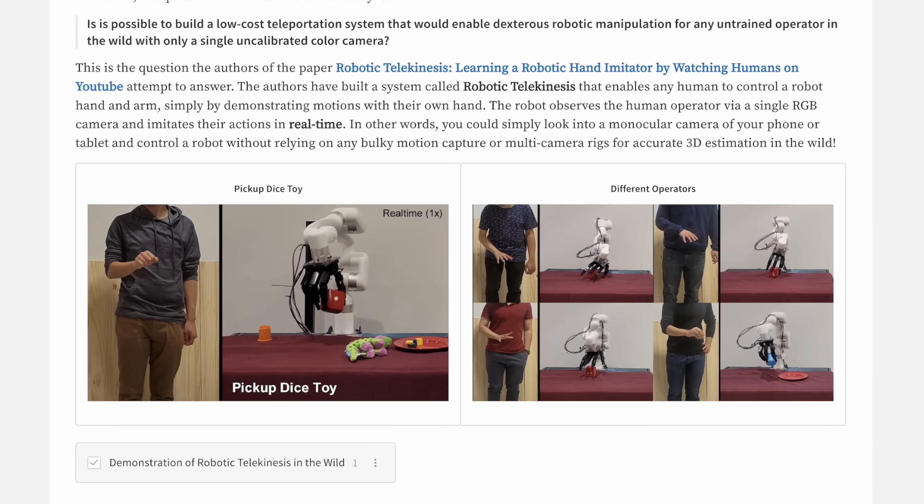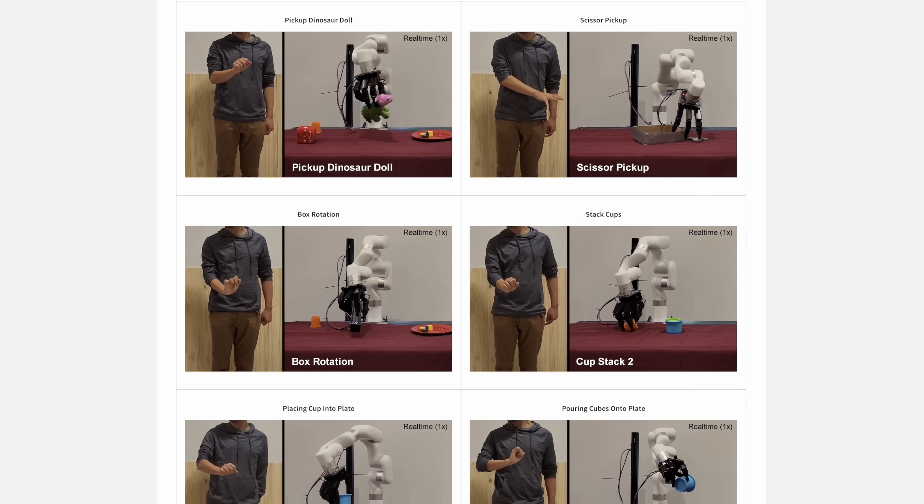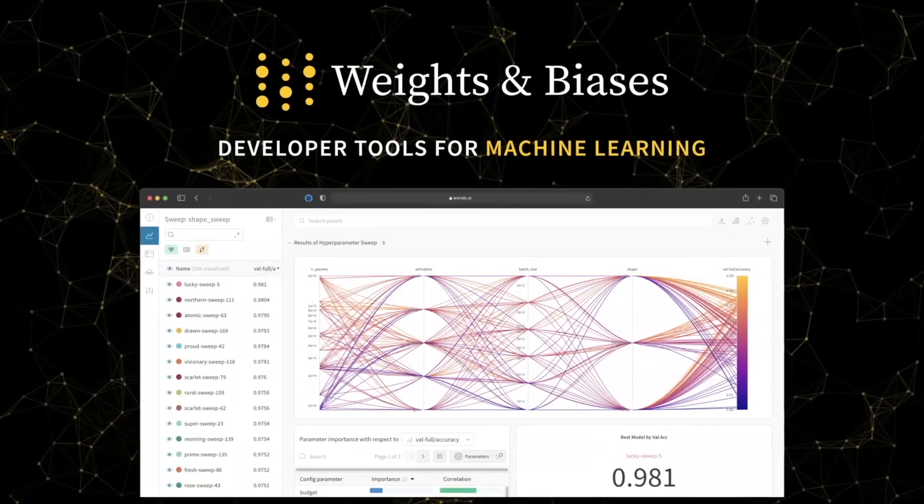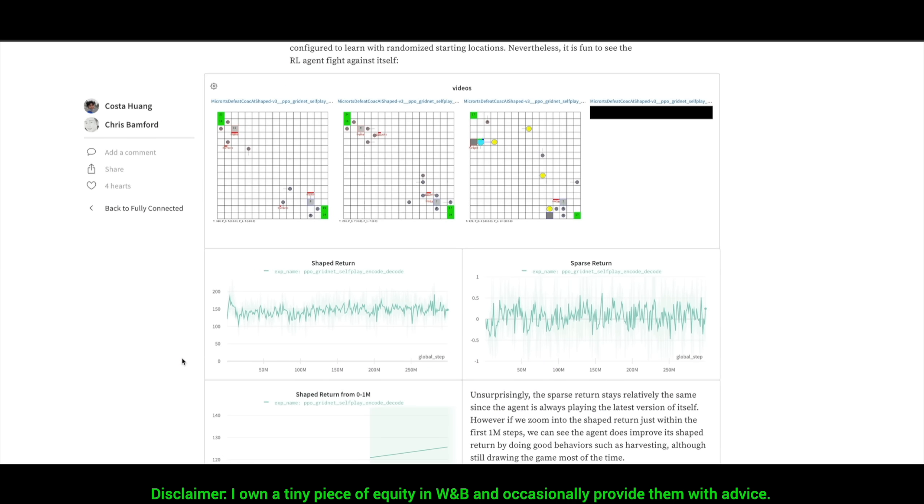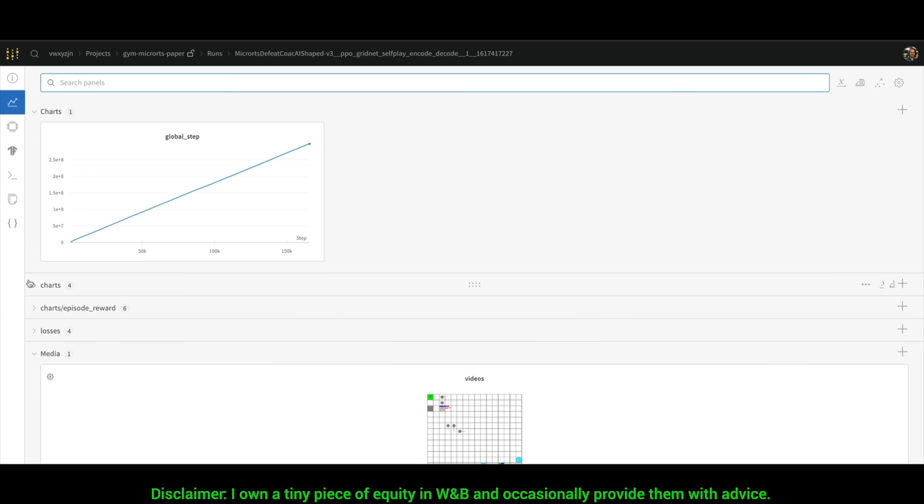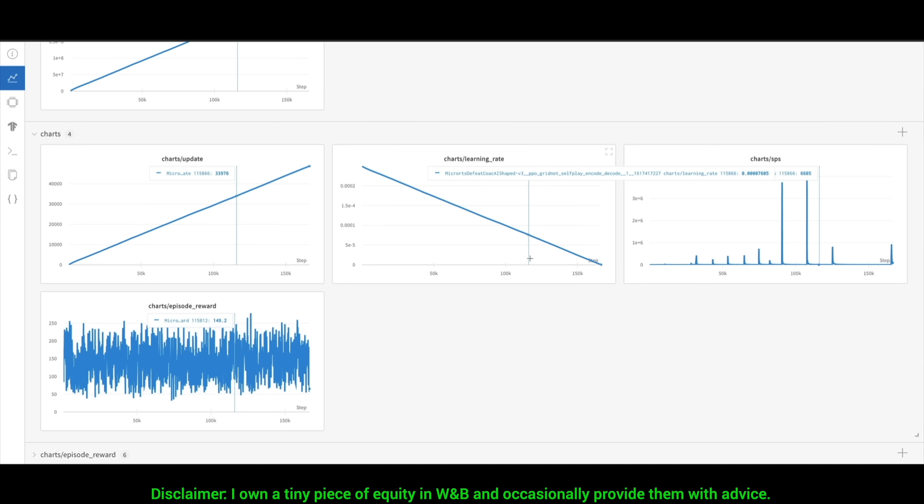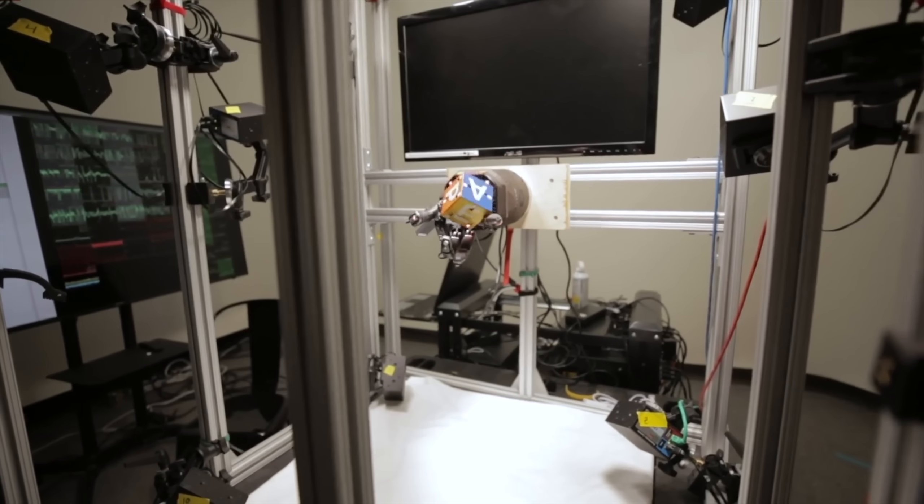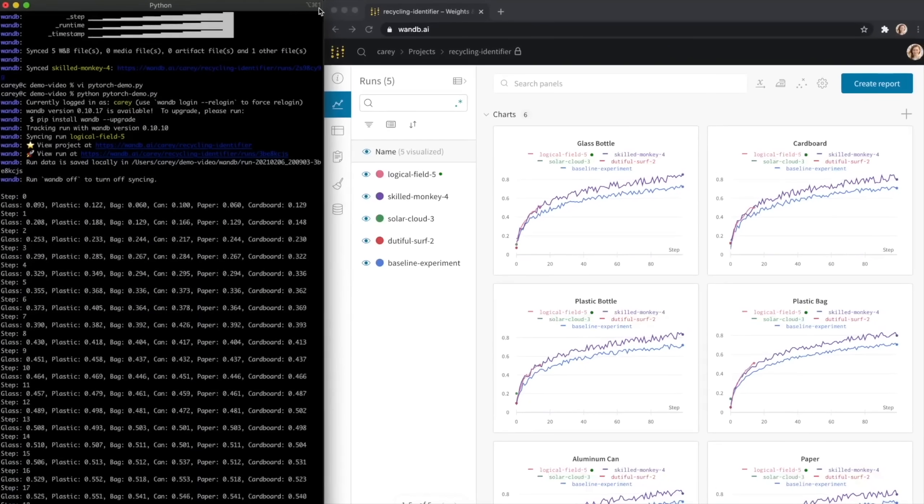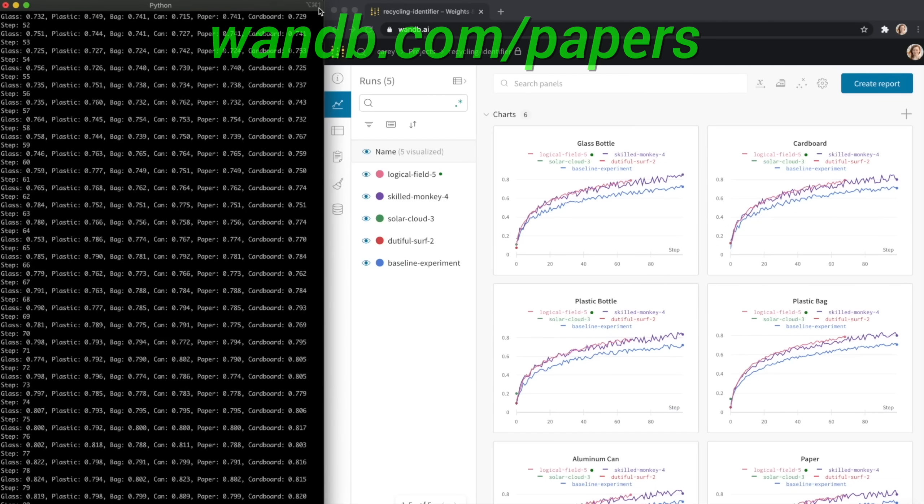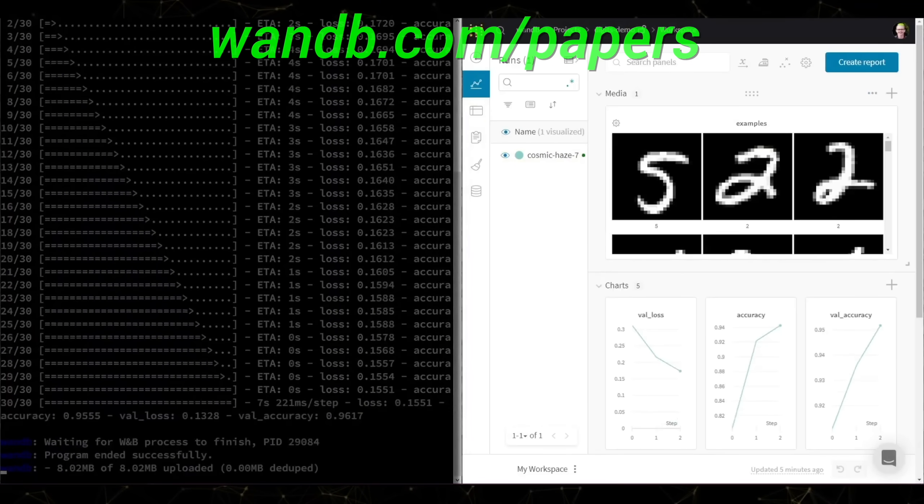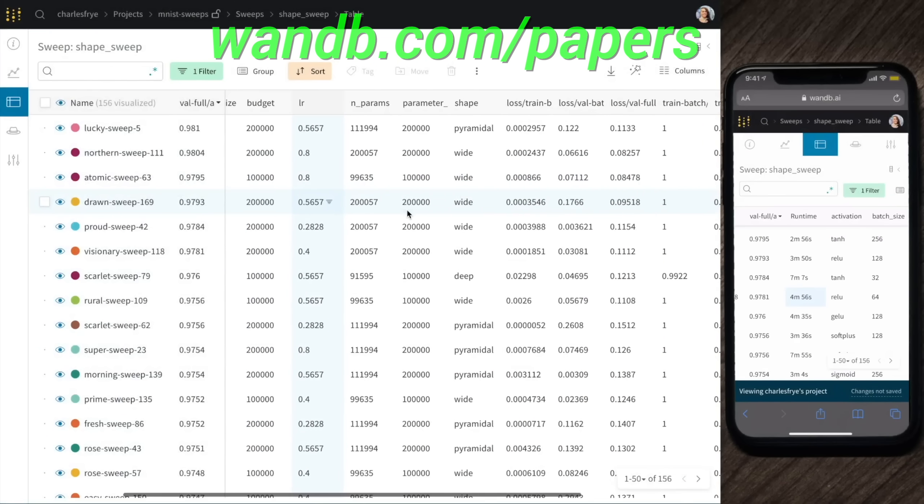What you see here is a report of this exact paper we have talked about, which was made by Weights and Biases. I put a link to it in the description, make sure to have a look, I think it helps you understand this paper better. Weights and Biases provides tools to track your experiments in your deep learning projects. Using their system, you can create beautiful reports like this one to explain your findings to your colleagues better. It is used by many prestigious labs, including OpenAI, Toyota Research, GitHub, and more. And the best part is that Weights and Biases is free for all individuals, academics, and open source projects. Make sure to visit them through WNB.com slash papers, or just click the link in the video description, and you can get a free demo today. Our thanks to Weights and Biases for their longstanding support, and for helping us make better videos for you. Thanks for watching and for your generous support, and I'll see you next time!